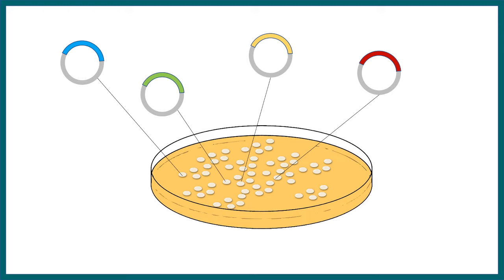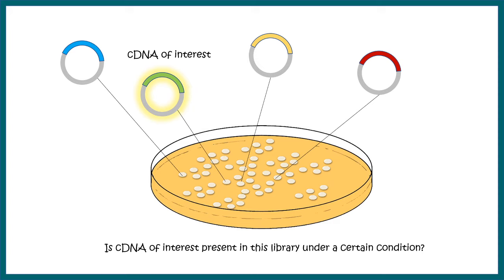This is a probability event — we don't know which colony corresponds to which gene of interest. Our goal is to identify whether a particular gene is present among these colonies or not. In order to do that, we can use a technique known as colony hybridization.